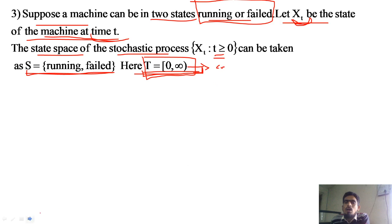Three examples have been given to illustrate stochastic processes. In each case, you take an experiment, and the sample space is observed over time — first, second, third instance — to form a collection of random variables.